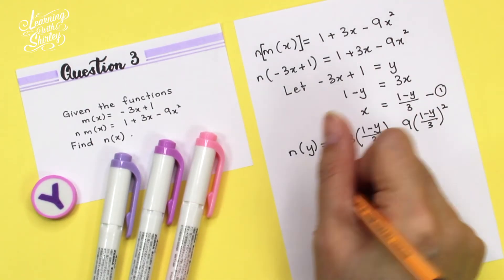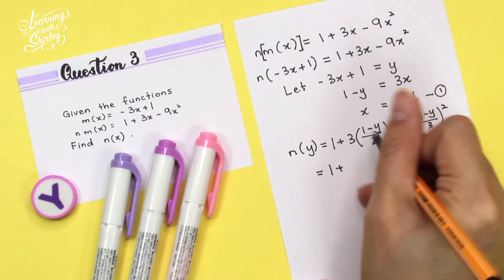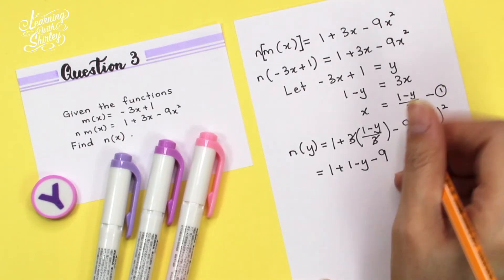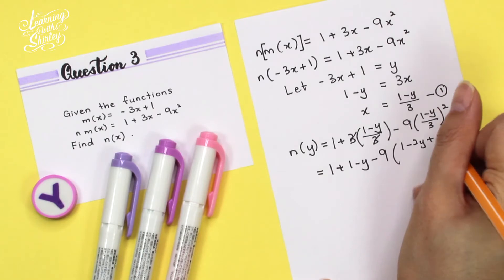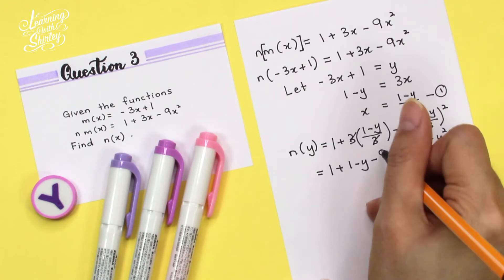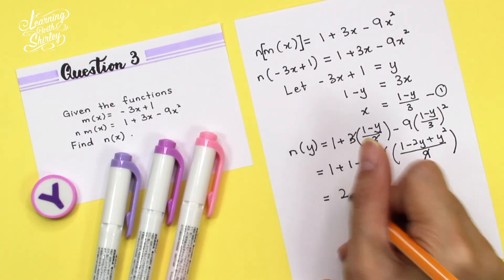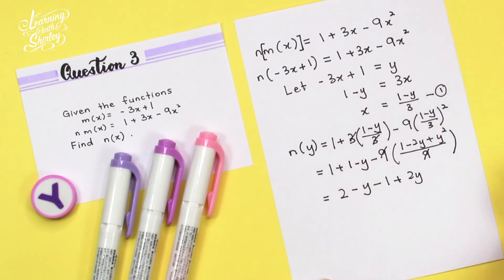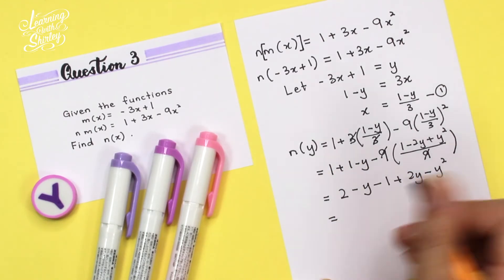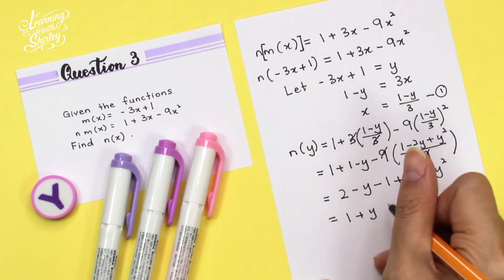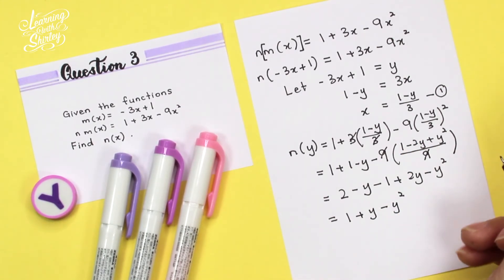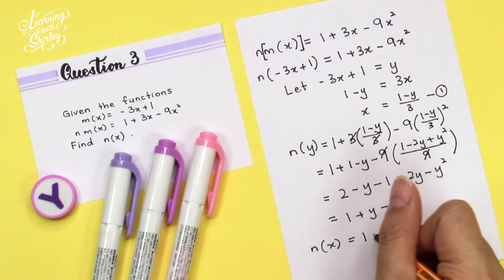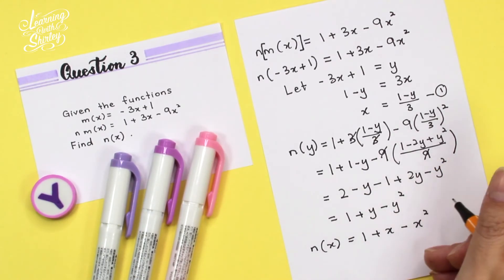Expanding: the 3s cancel, giving 1 + (1 - y), then minus 9 · (1 - 2y + y²) / 9. The 9s cancel too. So we get 1 + 1 - y - 1 + 2y - y², which simplifies to 1 + y - y². For the final answer, we change all y to x: n(x) = 1 + x - x².